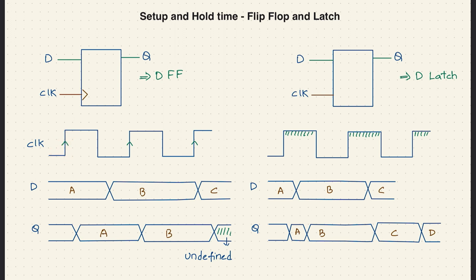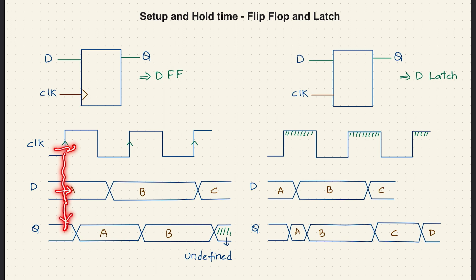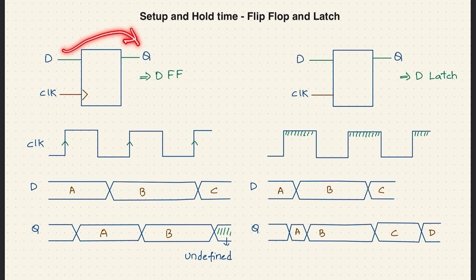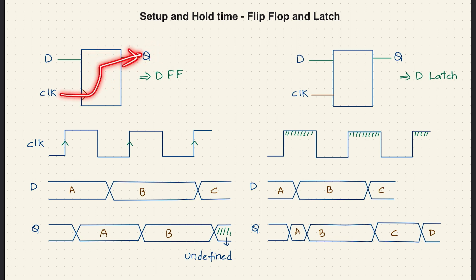Whenever the clock is positive, whatever signal is present at D will be propagated to Q. You may wonder why Q is changing after some time even though D is already at A when the clock edge arrives. That is because the gates present inside the flip-flop form a combinational circuit. Whenever the clock is at a positive edge, it takes some time for the input D to propagate to Q — this is called the clock-to-Q delay.